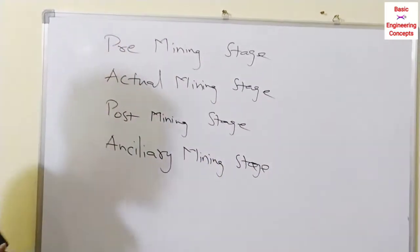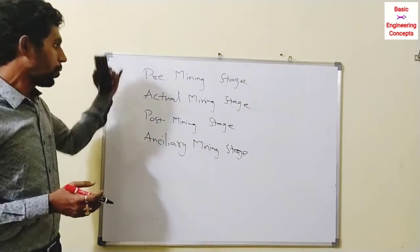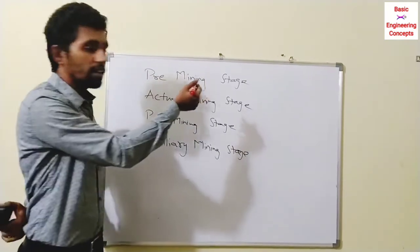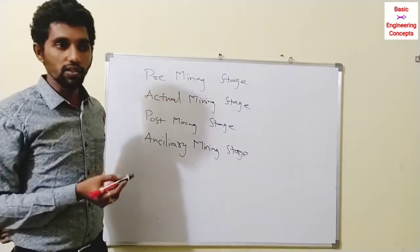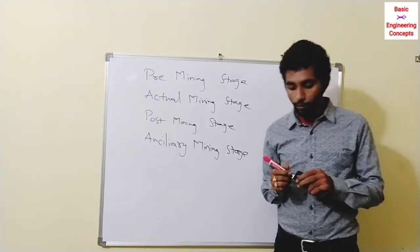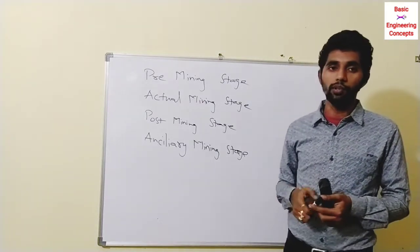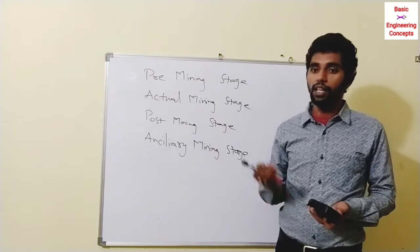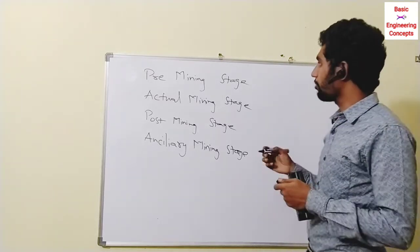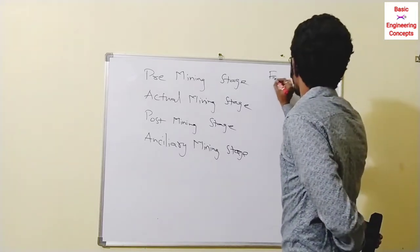There are four basic stages in mining activities: pre-mining, mining, post-mining, and ancillary mining stages. In pre-mining, we open a mine. We can do mineral production and carry out mining activities. The process of finding the mineral deposit is known as exploration.